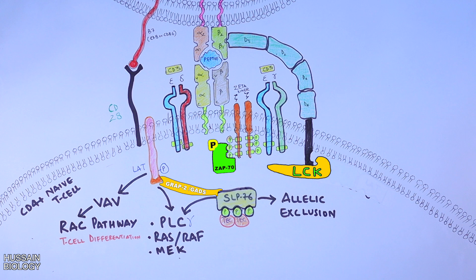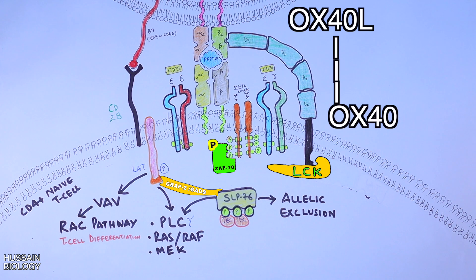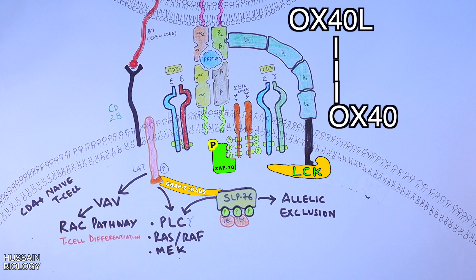Another notable interaction is the OX40 receptor interacting with the OX40 ligand of the APC. The OX40 ligand of the antigen presenting cell interacts with the OX40 receptor of the activated T cell after many hours of activation. When T cell proliferation and activation starts to slow down, this interaction comes to the rescue — preventing the signal from dying off and increasing cytokine production, thus leading to more T cell activation.